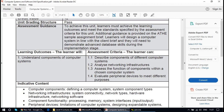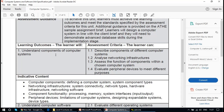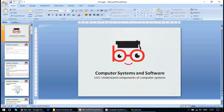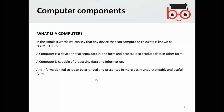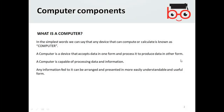Let us start from the very beginning of this unit. In simple words, any device that can compute or calculate is known as a computer. We will be going through the history of how computers were made and how they came into existence. Also, a computer is a device that accepts data in one form and processes it to produce data in another form — a computer is capable of processing data and information.